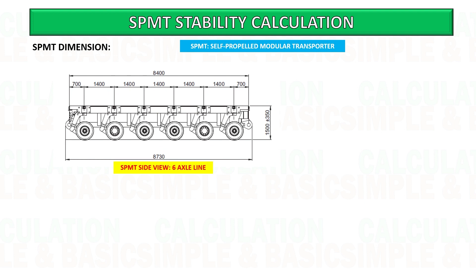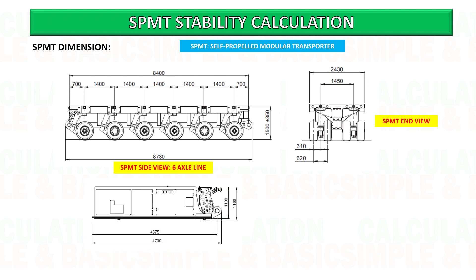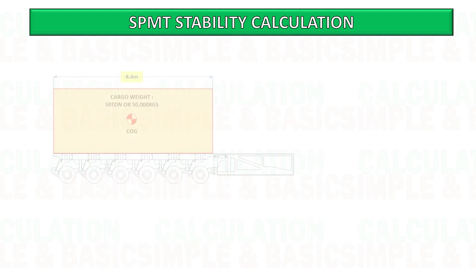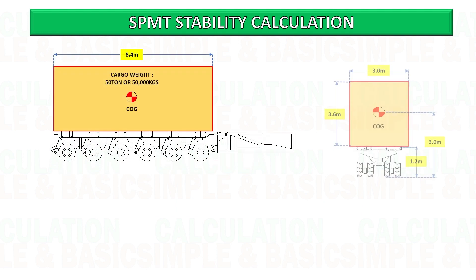In this video we will use six axle line SPMT with power pack unit. See the below dimension example. We will calculate the stability of the cargo on SPMT based on the below mentioned details.